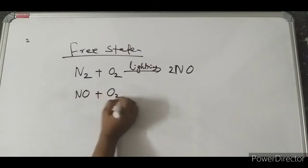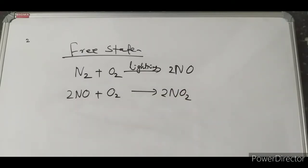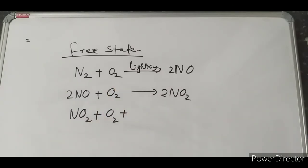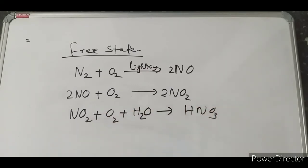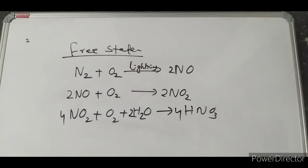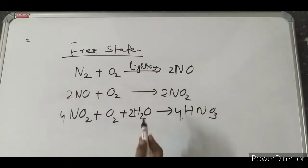In the first step, nitrogen reacts with oxygen under lightning to give nitric oxide (NO). In the second step, NO reacts with oxygen to give NO2. In the third step, NO2 in the presence of oxygen dissolves in rainwater to give HNO3. So under lightning conditions, the three-step equation is: N2 + O2 → NO → NO2 → HNO3.